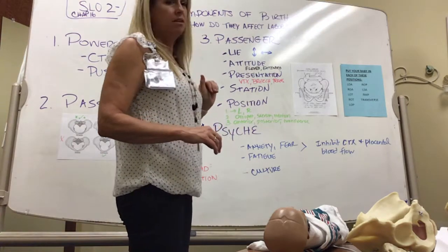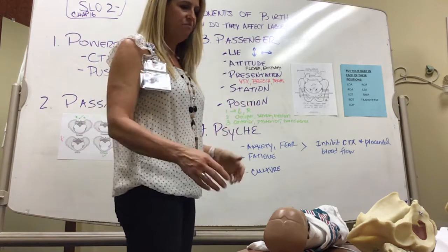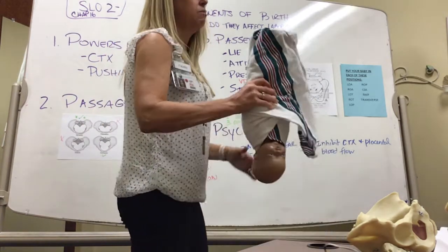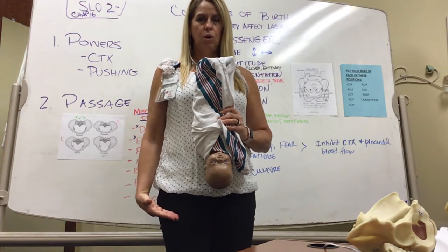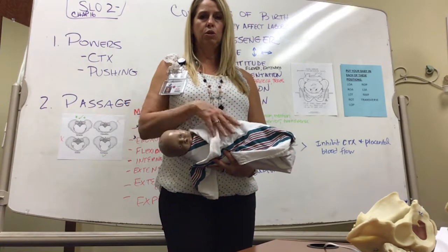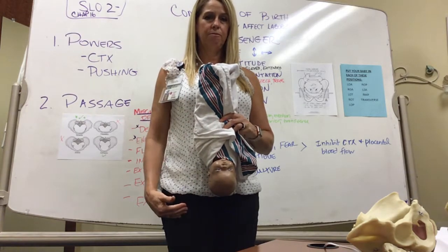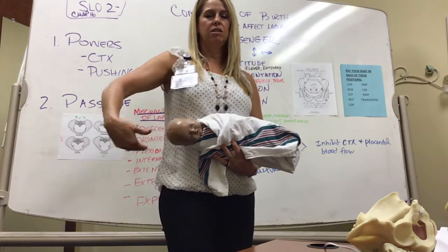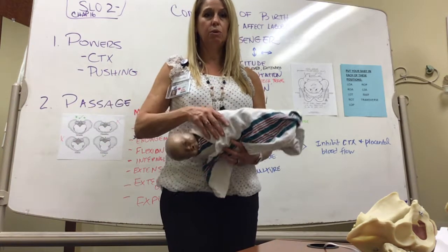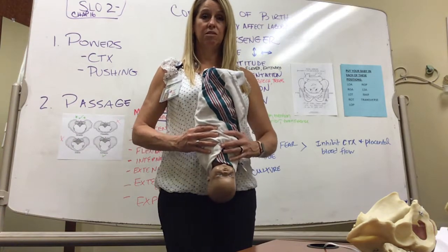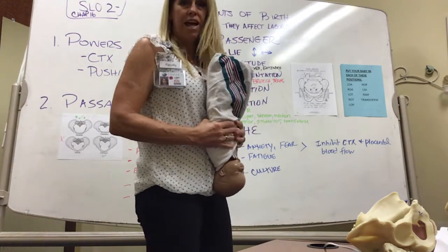The passenger is the baby. The baby has a number of things that have to align for easier delivery. One of them is the lie — how is the baby laying in mom? It can be longitudinal, going along with mom's spine, or transverse, going against mom's spine in the opposite direction. We want our babies to be lying longitudinally to come out.